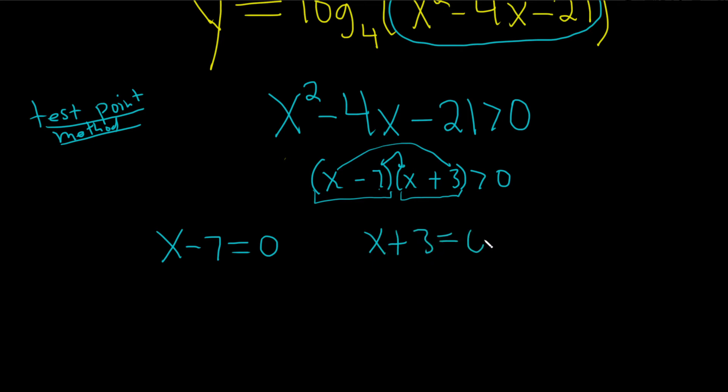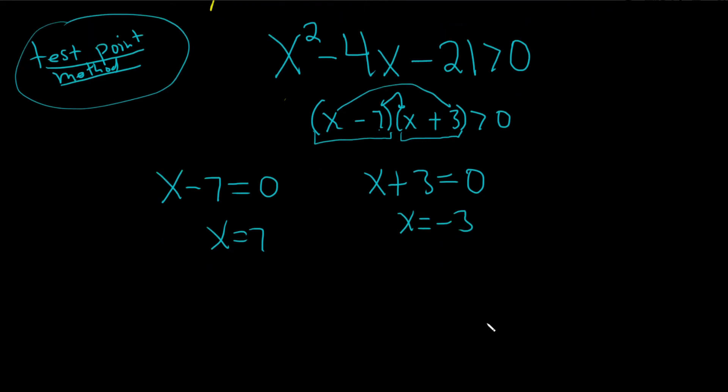x plus 3 equals 0. This is not like an algebraic move, right? This is just following the steps from the method. So then you solve each of these. And then you put these on a number line. And then you plug in test points. Hence the name test point method.